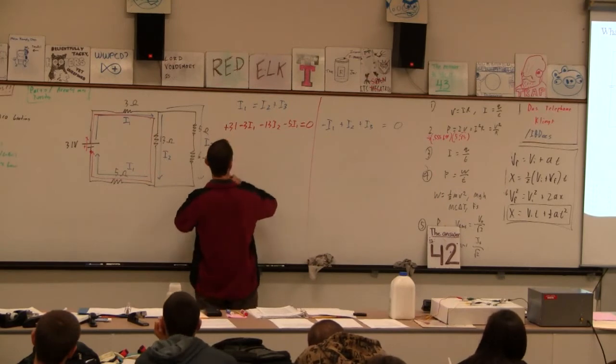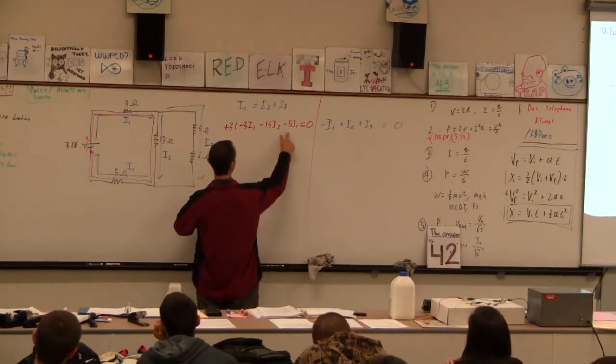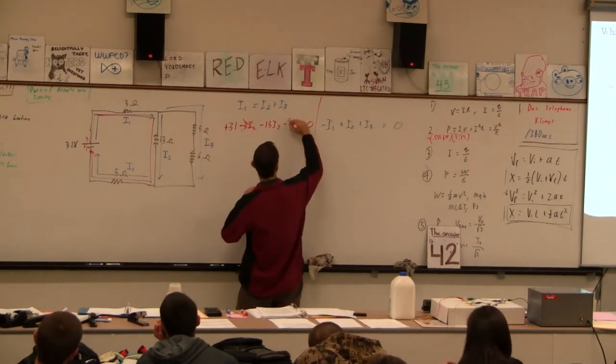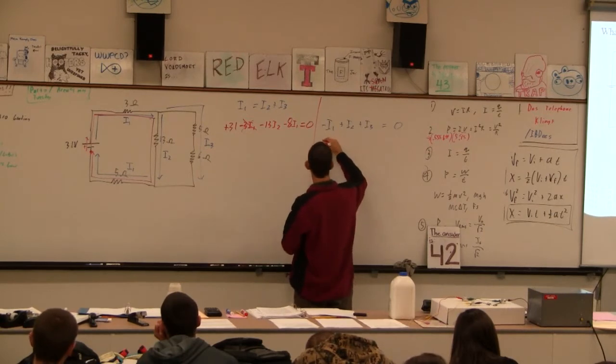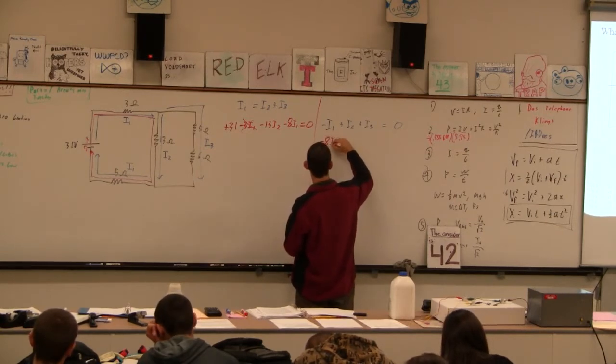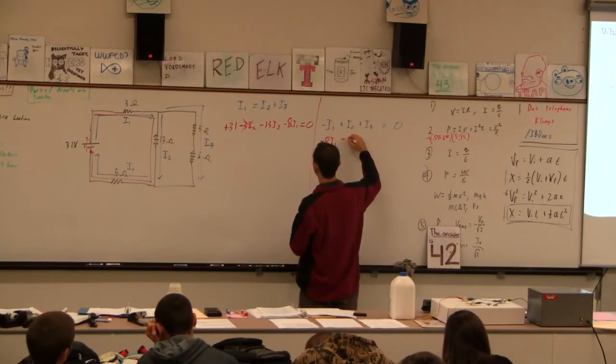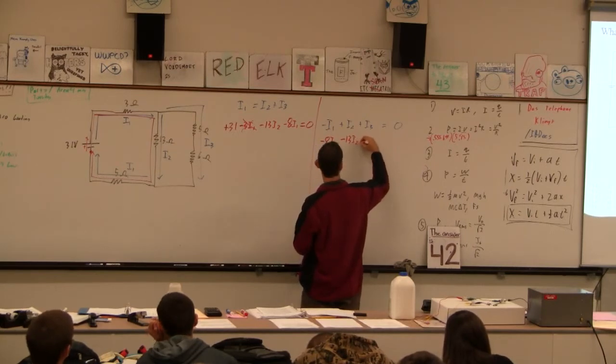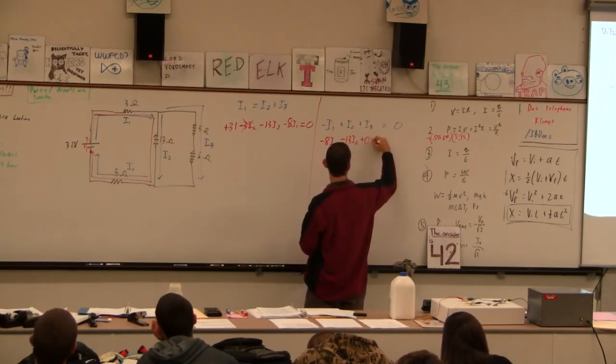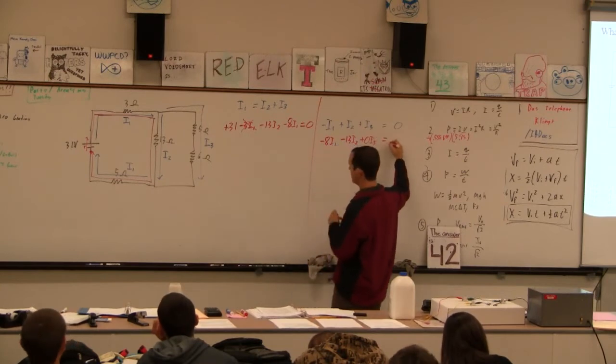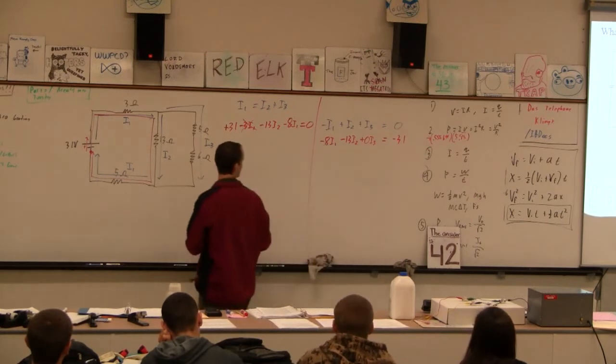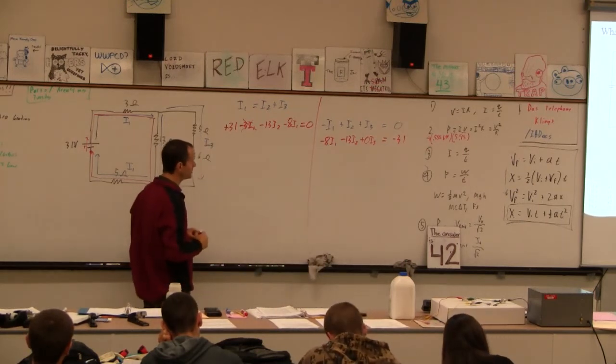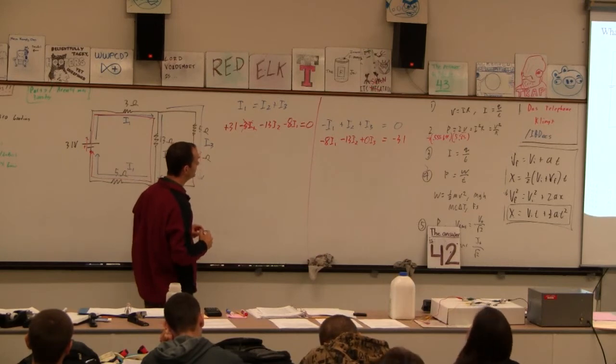Now I'm going to rewrite this guy. Can't I combine the I1s? So it's minus 8I1. And I'm going to rewrite this guy this way. Minus 8I1. Minus 13I2 plus 0I3 equals minus 31. Is that correct? I think so. And we could get rid of the minuses, couldn't we? If we wanted to.